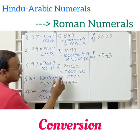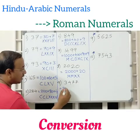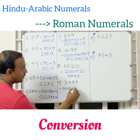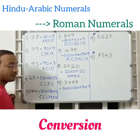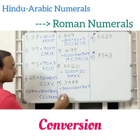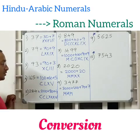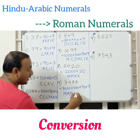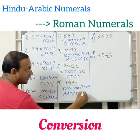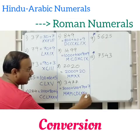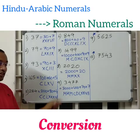Next, let us write 3477. Expanded form first: 3000 plus 400 plus 70 plus 7. How do we write 3000? It is nothing but MMM — M can be repeated three times. 400 is nothing but CD, 70 is nothing but LXX, and 7 is nothing but VII. So this is the Roman numeral for 3477.